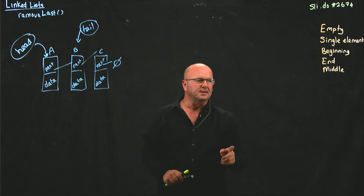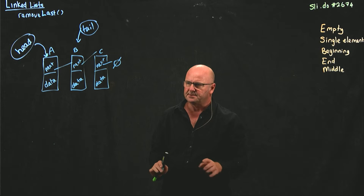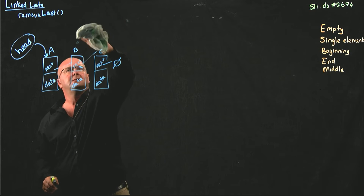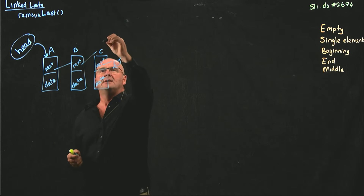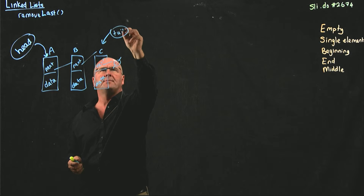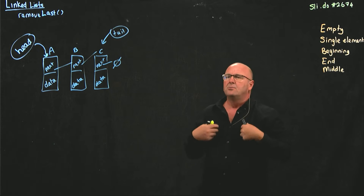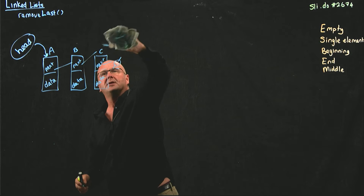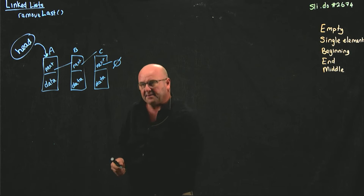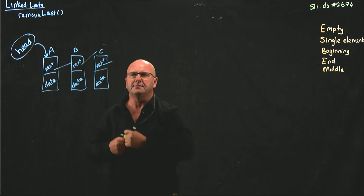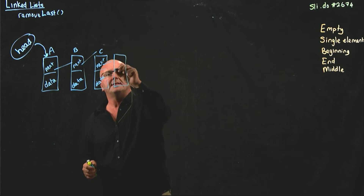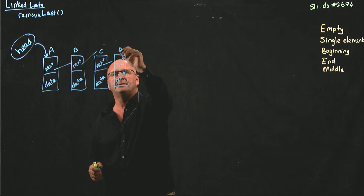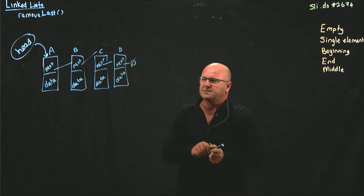I have to start at the beginning of the list. There's no alternative. With three things, it's relatively straightforward — I can just start at A and go to B and I'm done. But if I have a list with maybe ten nodes or a hundred nodes or a thousand nodes, how do I know that I'm at the last node? And how do I know that I'm at the node before the last node in order to be able to delete it?